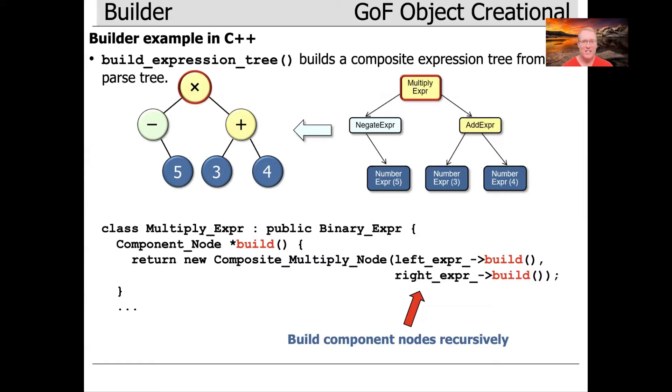If we were to pass in a parse tree, which we see on the right-hand side for the expression minus five times three plus four, which we use over and over again to make the case in as tangible and concrete way as possible.